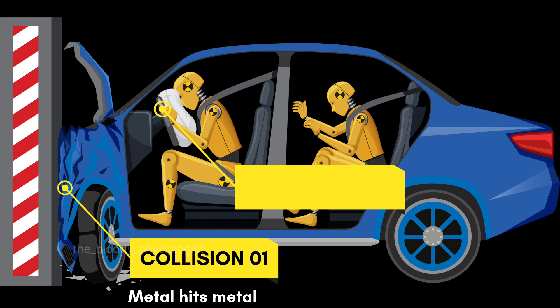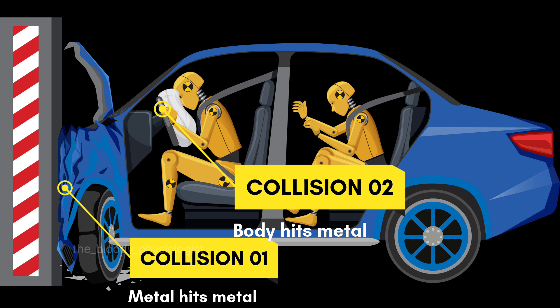In collision two, where body hits metal, the occupant collides with an object inside the car, like a steering wheel or dashboard. This is an example of Newton's second law of motion: an object in motion remains in motion until acted upon by an external force. When a car is mobile, the occupants inside are moving with the same velocity as that of the car. When the car suddenly stops, unless some restraining mechanisms are in place, the occupants continue their motion until they hit an object.